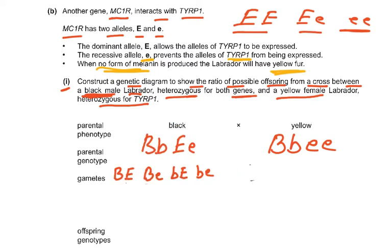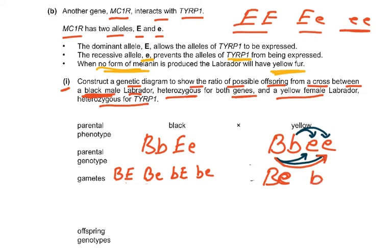For the gametes of the female parent, it is simpler. We have big B small E and small B small E — you can write each twice or once, it doesn't matter. So those are the two gamete types from the yellow female parent.